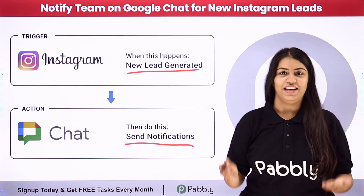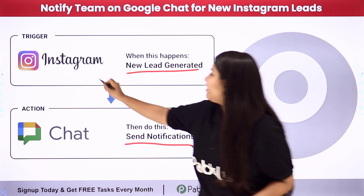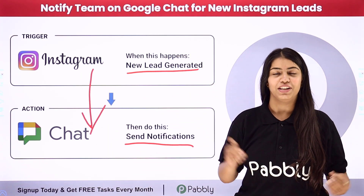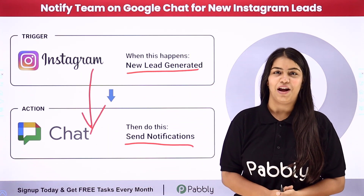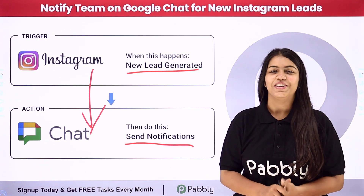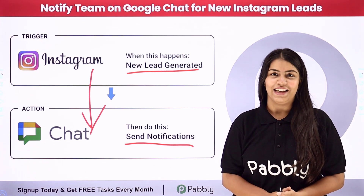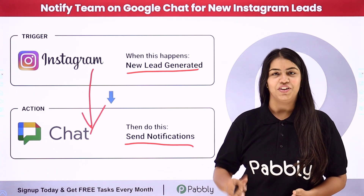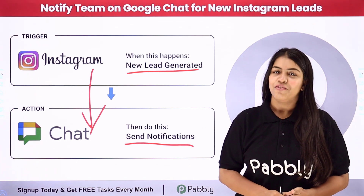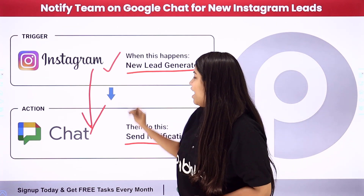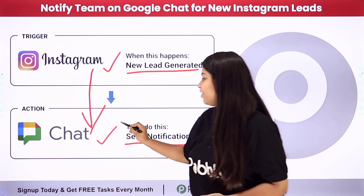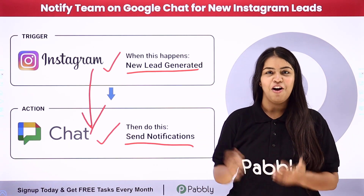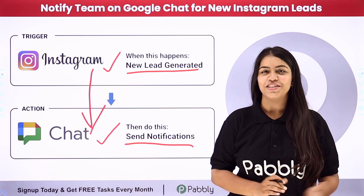For this we are going to create a connection between Instagram lead ads and Google Chat. To create this connection without any programming or coding, we are going to use Pabbly Connect — it is an amazing automation software. In Pabbly we have the concept of trigger and action. For the trigger we are going to use Instagram lead ads and for the action we are using Google Chat.